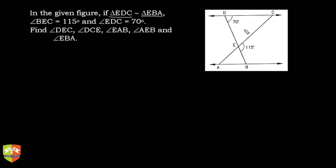These are the two similar triangles. Angle BEC is given to be 115 degrees and angle EDC is 70 degrees. We need to find angle DEC and other angles. Let's call this angle X.